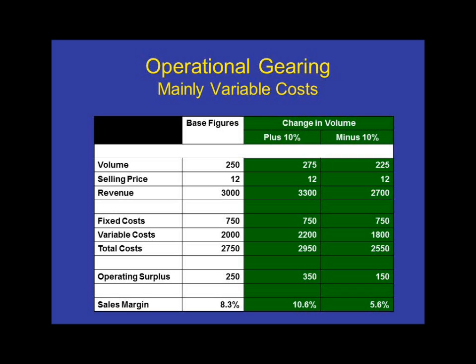This particular business has a lot of variable costs compared with what it spends on fixed costs. Variable costs are things like material costs; fixed costs are things like buildings, people, and machinery. Looking at the base figures, you can see that the total cost of the business is $2,750, of which $2,000 are variable and $750 fixed.